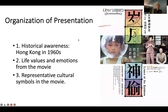In this presentation, we have three sections. In the first section, we are going to talk about the history of Hong Kong, with the focus on the 1960s. In the second part, we are going to discuss some life values and emotions from this movie. And in the last part, we are going to look at some representative cultural symbols shown in this movie and have more discussion based on each of these symbols.